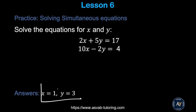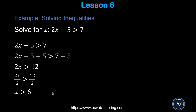Now we'll cover inequalities — very similar to regular equations. For 2x − 5 > 7: add 5 to both sides, giving 2x > 12. Divide both sides by 2, giving x > 6.